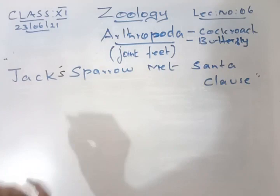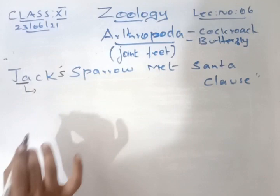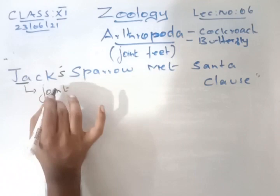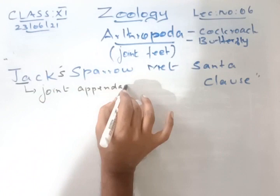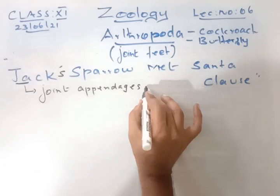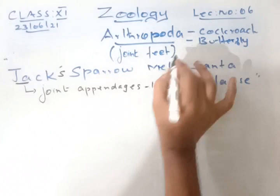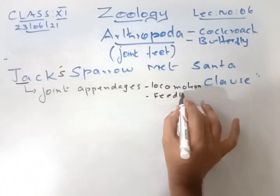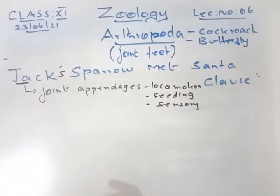J and A stand for joint appendages. These animals have joint appendages used for various purposes: locomotion, feeding, and sensory functions.